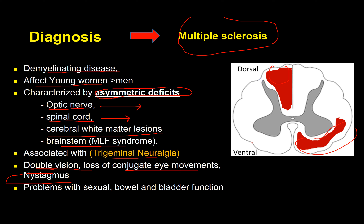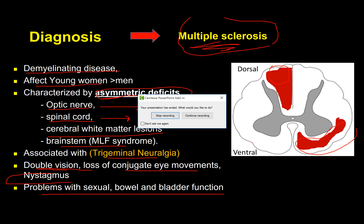Multiple sclerosis is also usually associated with bowel, bladder, and sexual function problems. Putting all these symptoms together — one symptom from a higher center, one from a lower center, one from the right side, one from the left side — this is a classical presentation for multiple sclerosis: a demyelinating disease affecting young women more than men, characterized by asymmetric deficits including optic nerve involvement, trigeminal neuralgia, and somatomotor or sensorimotor dysfunction. I hope this is helpful — thank you very much.